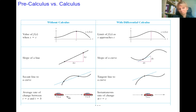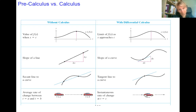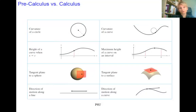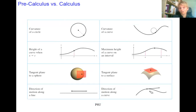The average rate of change between two points is easy to compute without calculus. But the instantaneous rate of change — the rate of change at a single instant — is a big topic in calculus. Other comparisons include the height of a curve at a few points versus finding its maximum on an interval, and direction of motion along a line versus along a curve.